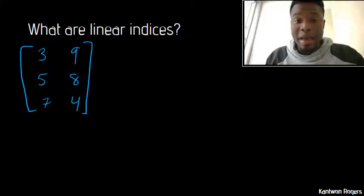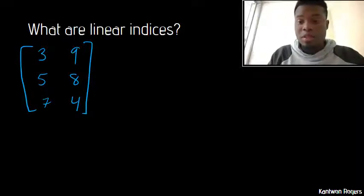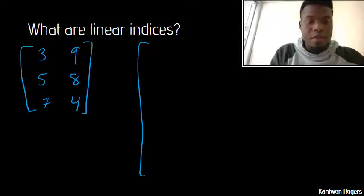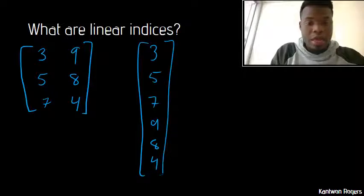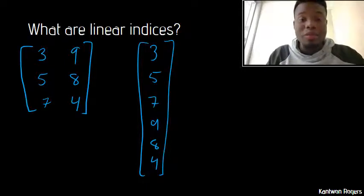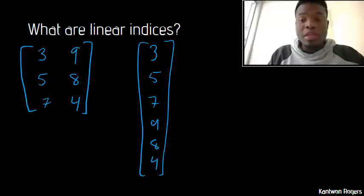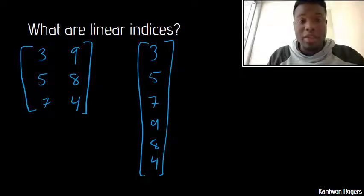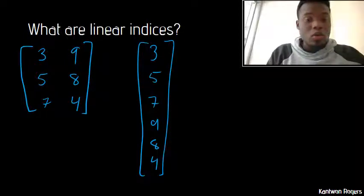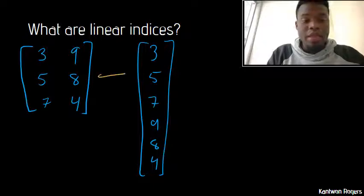Instead, the way that this is saved in MATLAB and the way that this is saved in memory is as one long vertical vector. So in memory, what this looks like is 3, 5, 7, 9, 8, 4. However, behind the scenes, MATLAB is doing some conversions in order to make it appear to be two-dimensional. And so because of this, since it's saved like a vertical vector, these elements have what we call linear indices. And notice how when I translated this array to this vector, I kind of went down the columns.